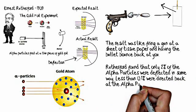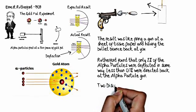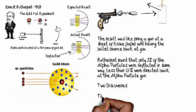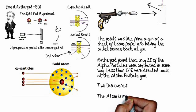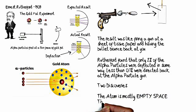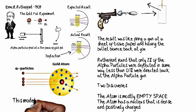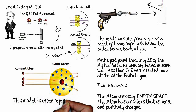So this leads to two major conclusions. First, the atom is mostly empty space. It was calculated that one one hundred thousandth of the atom's volume is actually due to the nucleus. And the second conclusion is that the atom has a nucleus, which is a dense positively charged region at the center of the atom.